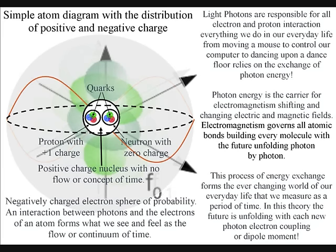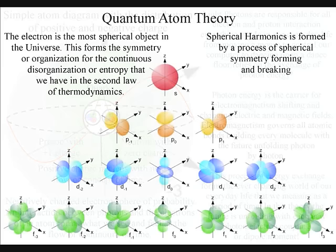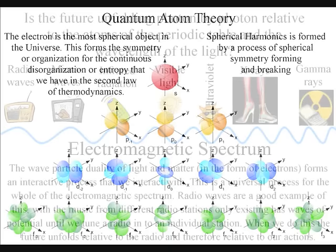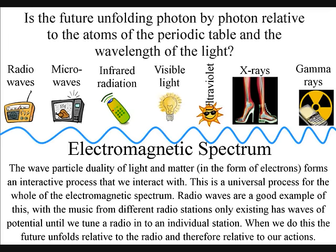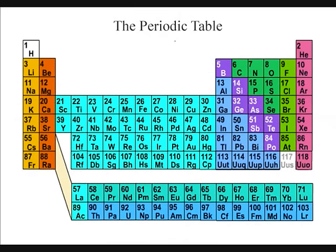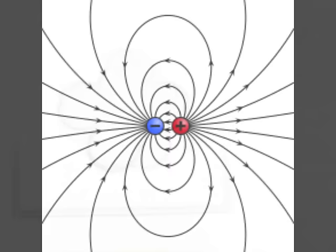But the electron cloud of probability that surrounds the nucleus exchanges particles of electromagnetism called photons. It is this exchange of energy that forms what we see and feel as the flow of time, with the future unfolding relative to the atoms of the periodic table with each new photon electron coupling or dipole moment.